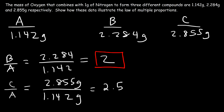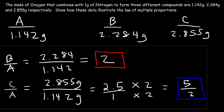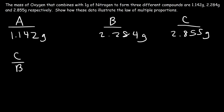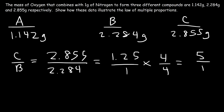2.855 divided by 1.142 is about 2.5, or 2.5 over 1. To get a whole number, we multiply the top and the bottom by 2, so the ratio of C to A is 5 to 2. Now let's find the ratio of C to B: 2.855 divided by 2.284 gives 1.25. Multiplying by 4 gives us 5 over 4, so the ratio of C to B is 5 to 4.